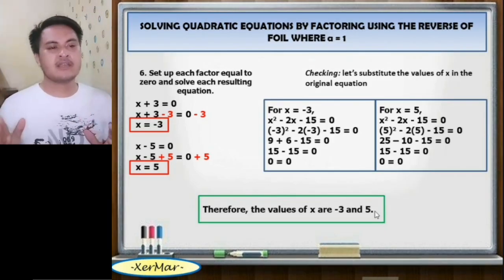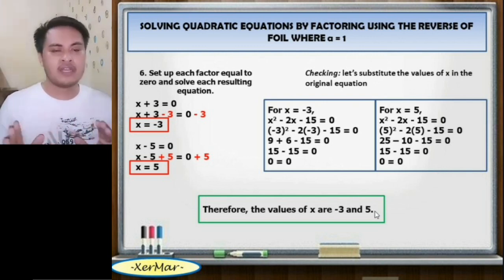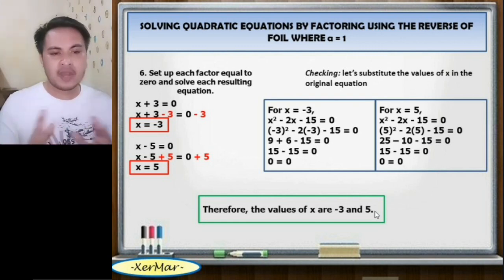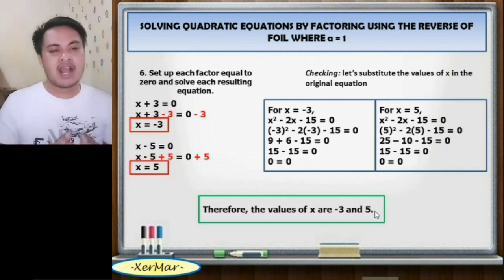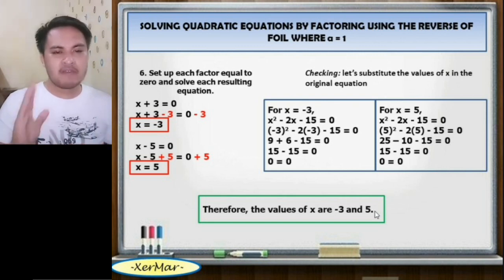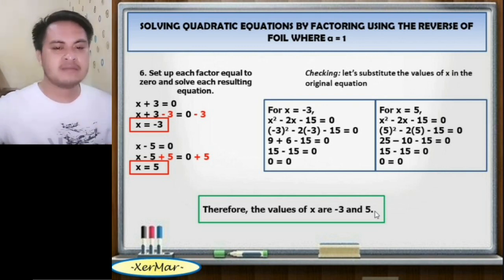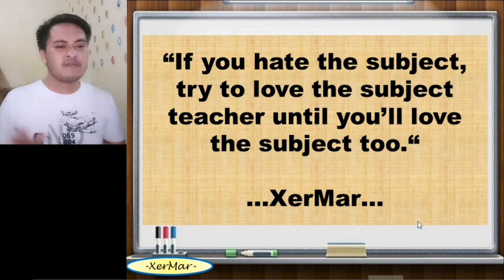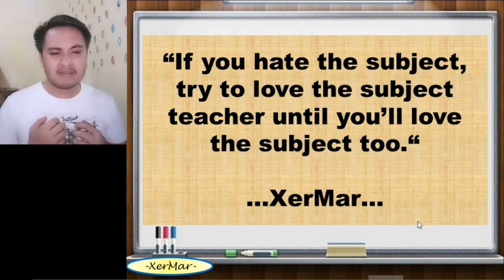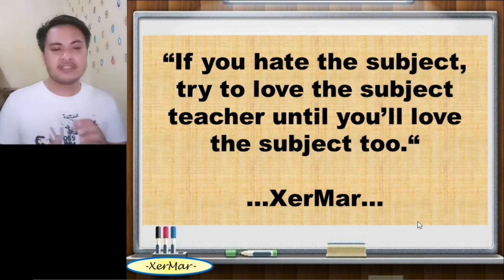This is the end of our lesson on solving quadratic equations by factoring using the reverse of FOIL method where A equals 1. Since this is just part 1, expect part 2 wherein the leading coefficient is higher than 1. And before I end this session — if you hate the subject, try to love the subject teacher until you'll love the subject too. Bye!